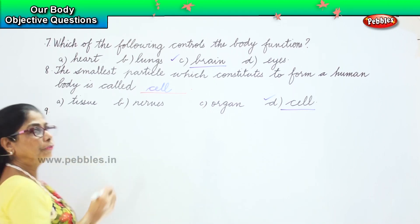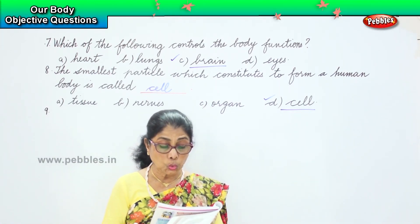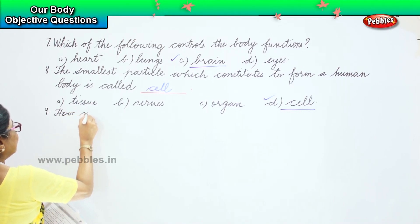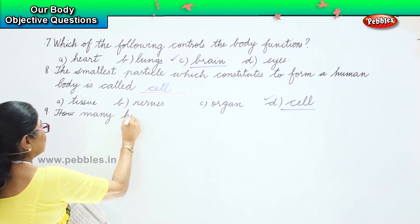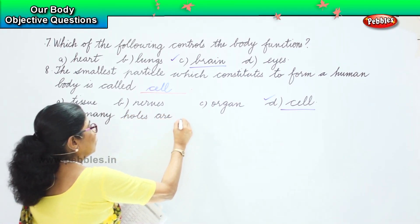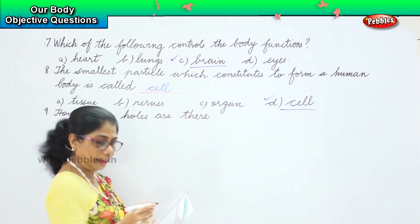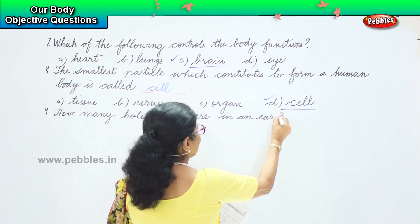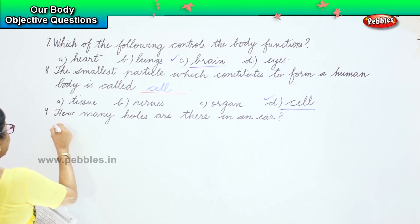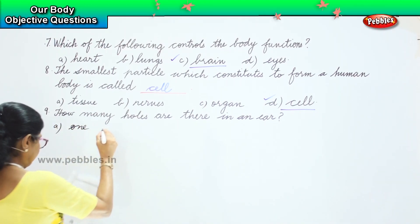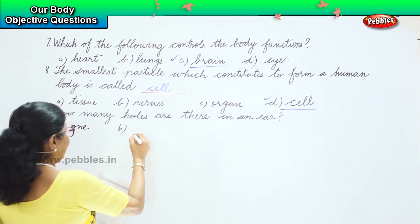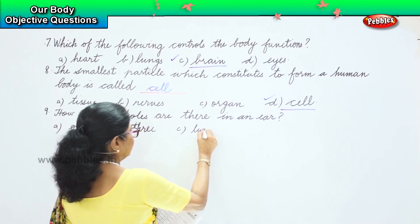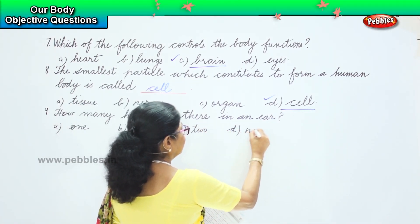Question nine: how many holes are there in an ear? Your options are: A — one, B — three, C — two, and D — none, no holes at all.